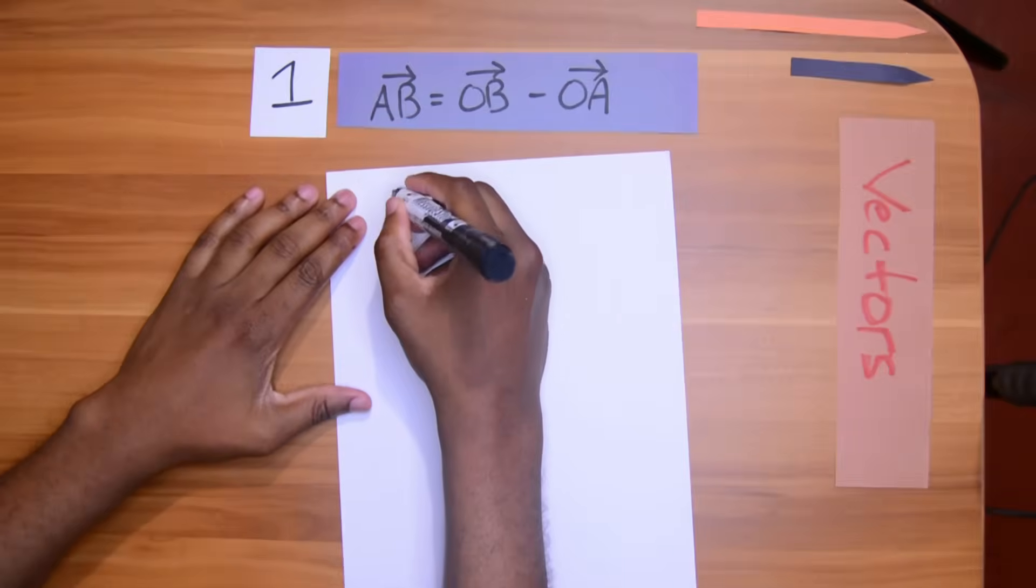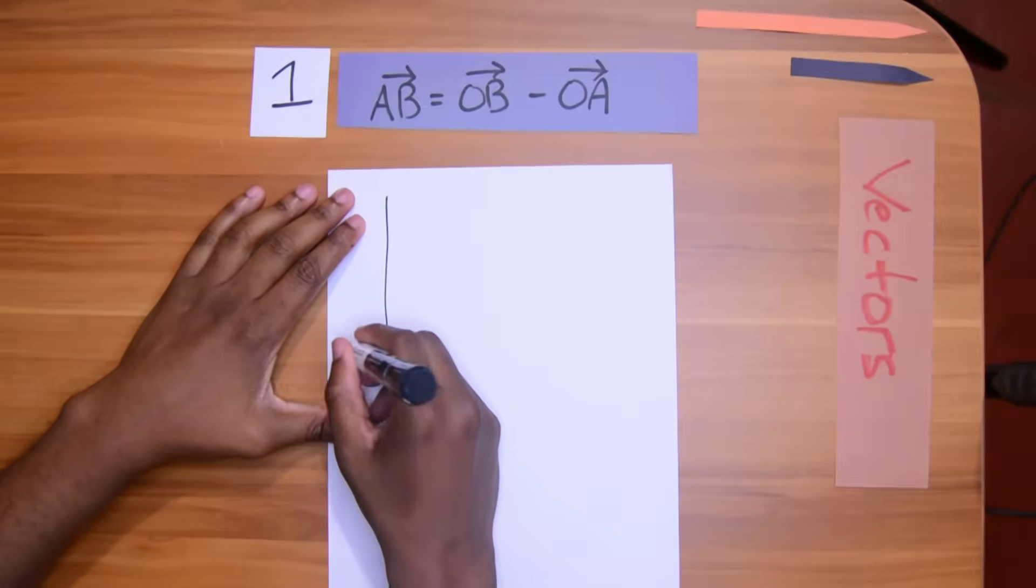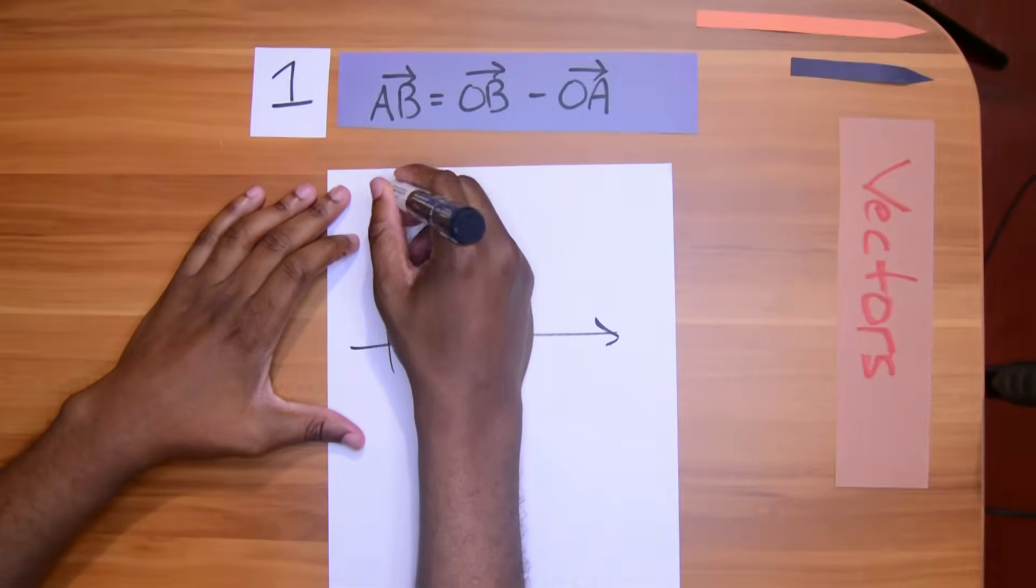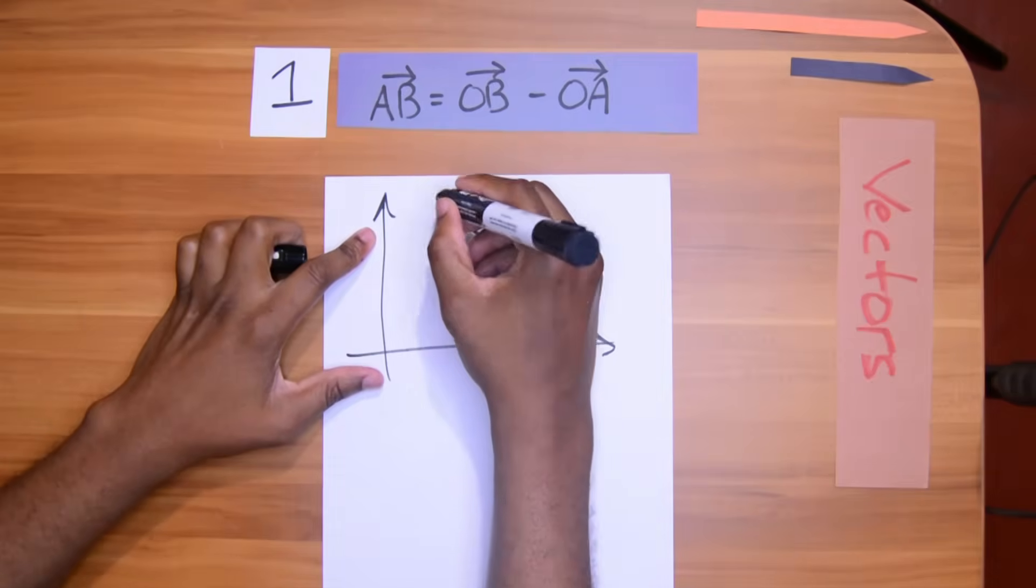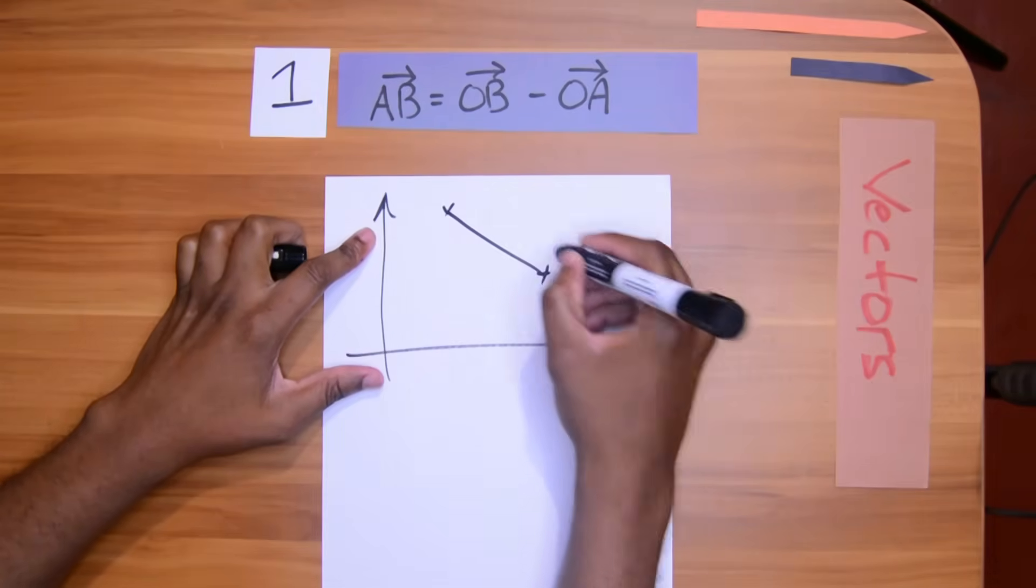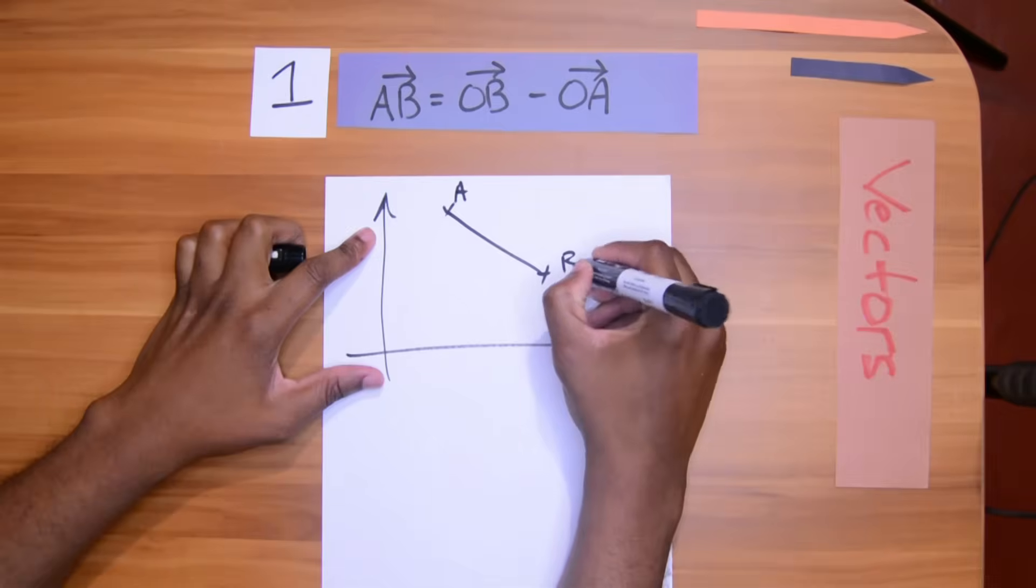Let's suppose I have a Y axis and an X axis and I have a vector lining like this from two points A and B.